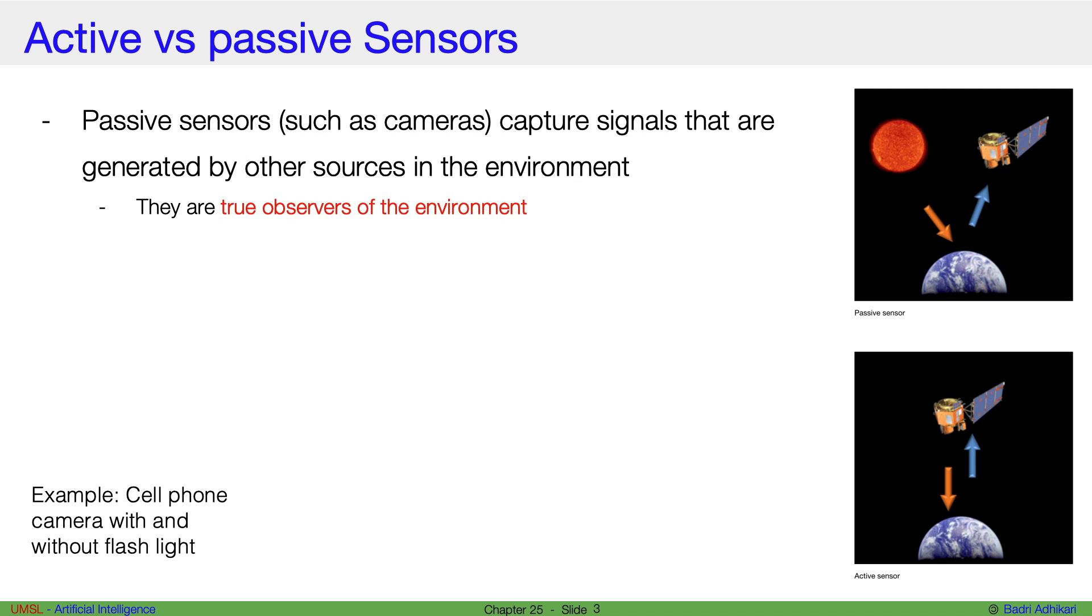Now let's look at active sensors versus passive sensors. As I just mentioned, passive sensors, such as the camera in our phone, capture signals that are generated by other sources in the environment. So, say for example, here's Earth.